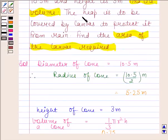Now look at the question. The question says the heap is to be covered by canvas to protect it from rain. Find the area of the canvas required.